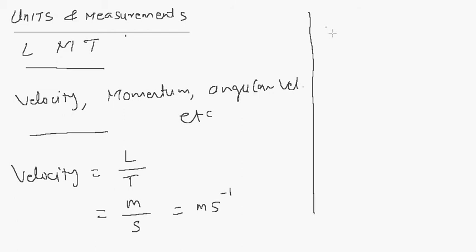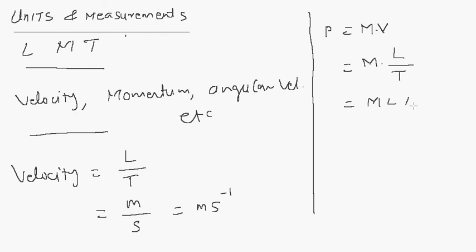Similarly, momentum P is mass times velocity. Velocity is length (distance) per unit time t, so momentum can be written as m·L·t⁻¹. Mass is measured in kilogram and time is measured in seconds.